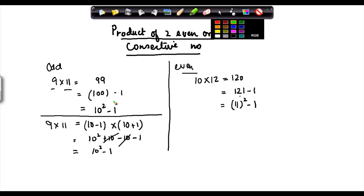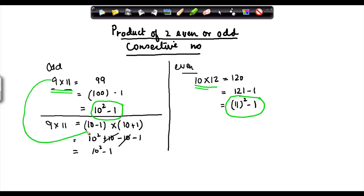Now in both the cases if you see, I reached a situation here where I got this 10 square minus 1, and I also reached a situation here where I got 11 square minus 1. Now what did I take here? I took two consecutive even numbers here, I took two consecutive odd numbers. So in both these cases I took two even or two odd consecutive numbers.